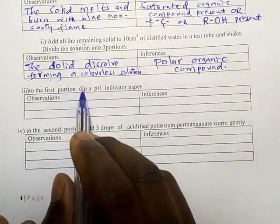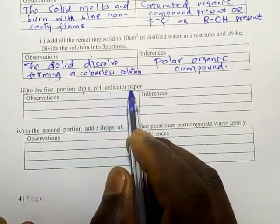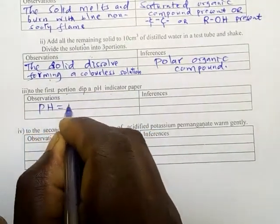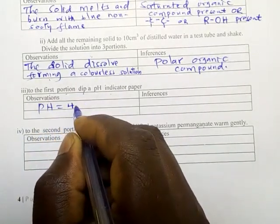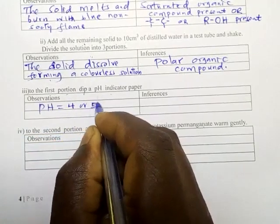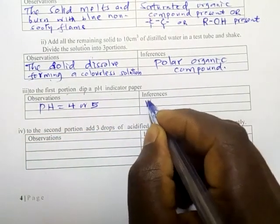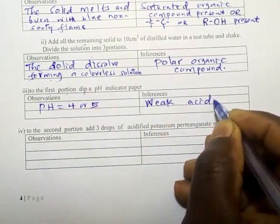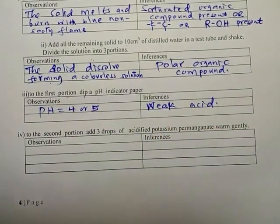To the first portion, dip a pH indicator paper. The pH equals 4 or 5. That's a weak acid present.